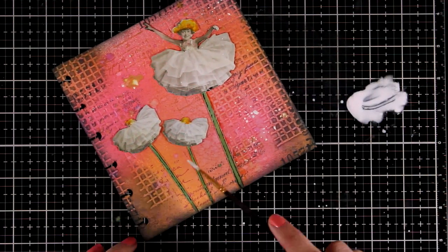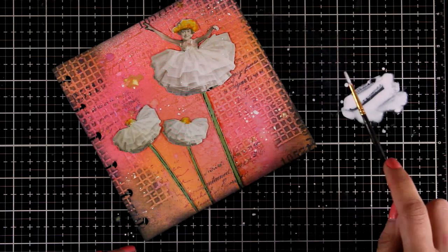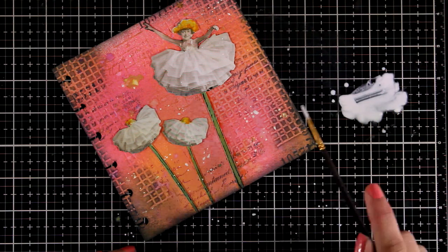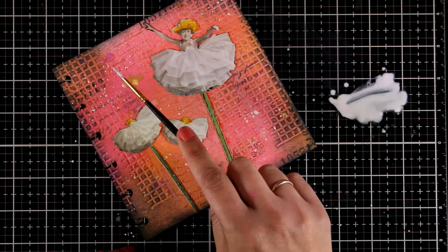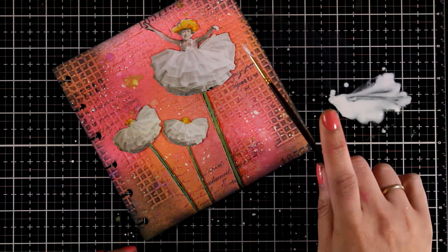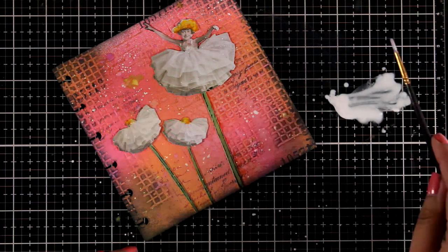I'm also going to add some splashes. This is watered down gesso and it's not going to stay as white as it looks at the moment. The water in there, this watered down gesso, is going to react with the color underneath, so it is going to look lighter than the background but not as bright white as it is now.